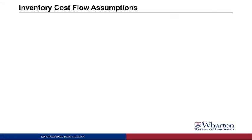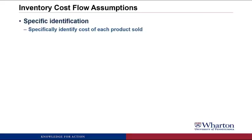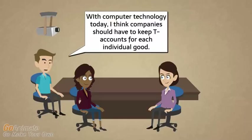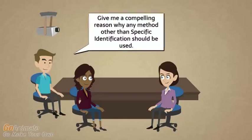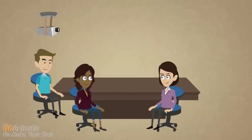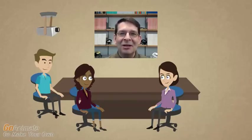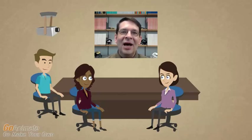Let's talk in more detail about these specific inventory cost flow assumptions, starting with specific identification. Under this method, we specifically identify the cost of each product that we sell. With computer technology today, I think companies should keep accounts for each individual good. But here's a compelling reason why another method might be used: what if you made toothpaste or salad dressing, where you're mixing gallons of liquids in a big vat? How do you track the cost of a specific ounce? In that case, you would need some kind of cost flow assumption. And even with discrete products, it would take a lot of time and effort to track individual costs when making thousands or millions of products. Cost flow assumptions get you pretty close to the same answer anyway, without all the time or effort.